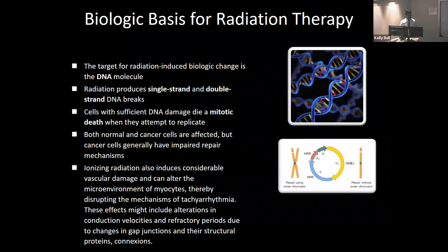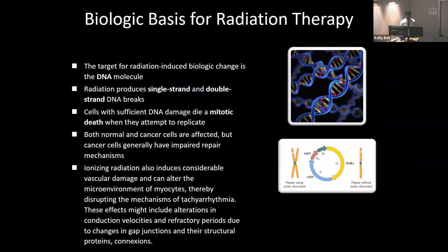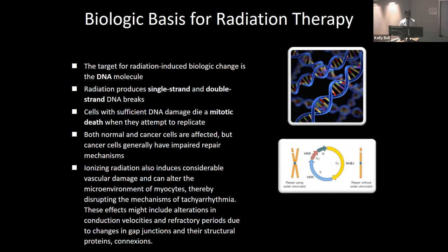For cancer medicine, the target of radiation damage is the DNA molecule. Radiation causes single and double-stranded DNA breaks, and cells die during mitotic cell death. Both normal and cancer cells are affected, but normal cells can repair better between sessions — which is why we typically treat patients over many days. For cardiac radiation, we don't have cancer cells, so we just treat over a single session. Why are we getting the effects we're seeing in VTAC with radiation? The short answer is we don't know. Based on the short time interval for efficacy, it likely has nothing to do with DNA damage or fibrosis, but rather affects the microenvironment of myocytes, altering refractory periods and conduction velocities due to changes in gap junctions and connections. At every conference there are new theories — it's really fascinating science.